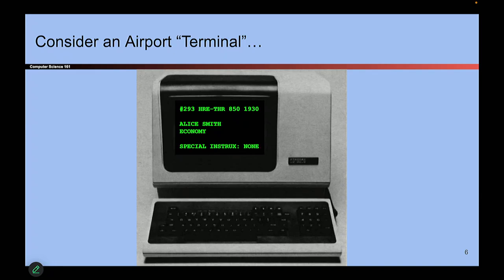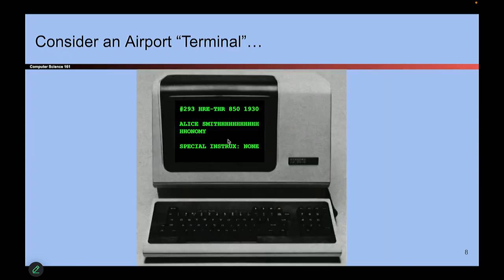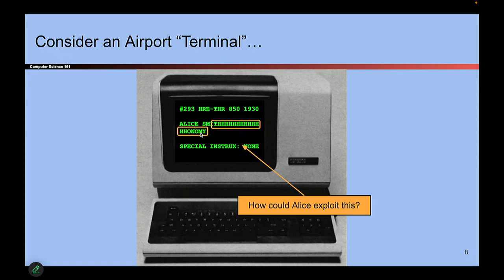What if Alice Smith, when booking her plane ticket, fell asleep on the keyboard or her cat walked on it, and instead of writing 'Alice Smith' she wrote 'Alice Smith H-H-H-H-H-H-H-H'? She goes to check in and the old computer shows: 'Your name is Alice Smith H-H-H-H-H-H and your class is H-H-onomy.' Think about what happened here — how do you want to exploit this? What name could Alice give herself to cause something bad to happen? Pause the video, think about it.